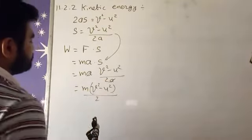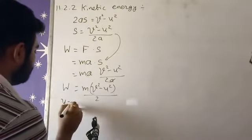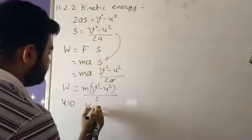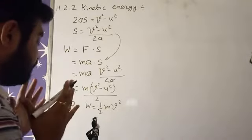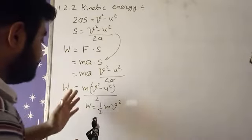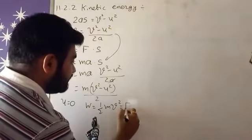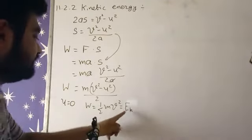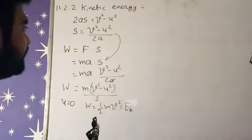This is the work done formula. But if the object starts its motion with zero initial speed, then u = 0 and this equation becomes W = ½mv². Work is nothing but one type of capacity — by the energy we are having work. So that is why we can write Ek, which means kinetic energy. The kinetic energy formula is ½mv².